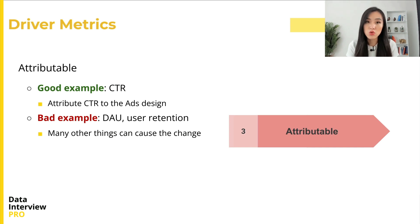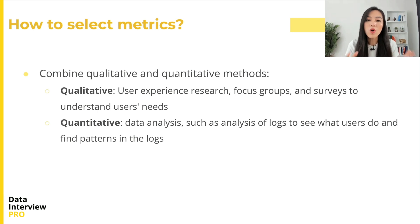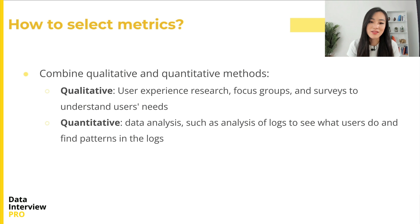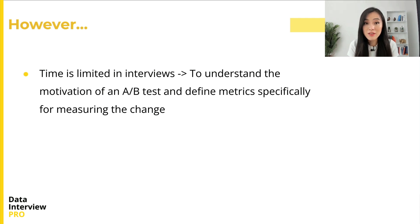Now let's talk about how to come up with driver metrics. In practice, there are many ways to come up with ideas for metrics and validate existing metrics. Metrics can be developed by combining qualitative and quantitative methods. Qualitative methods include user experience research, focus groups, and surveys. Quantitative methods include analysis of logs to find patterns in the data. But very often, especially during interviews, we don't have time to leverage all those methods. So what we can do is understand the motivation of an A/B test and define metrics specifically for measuring the changes.